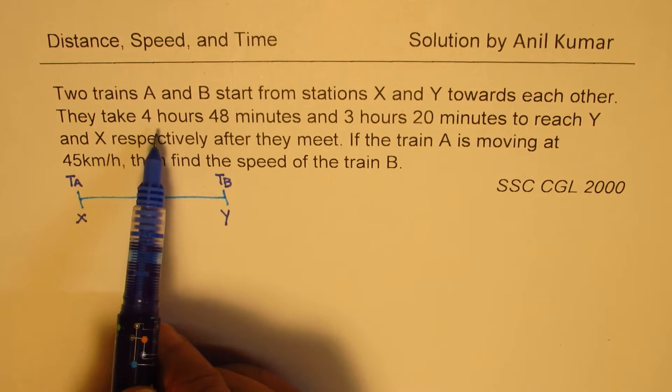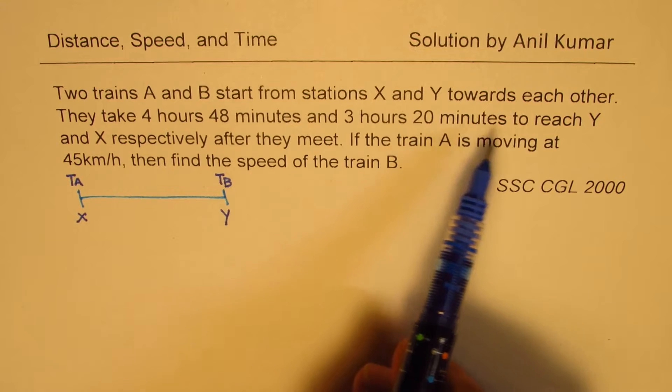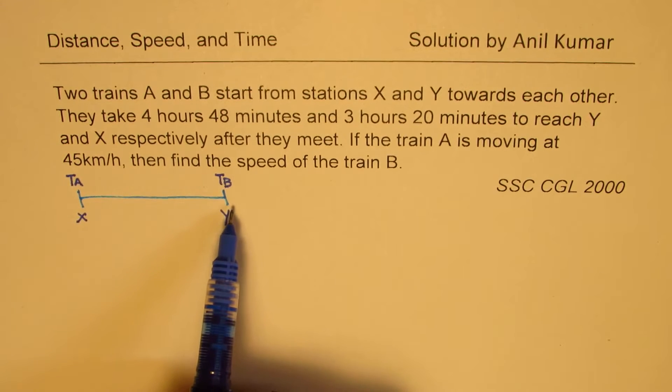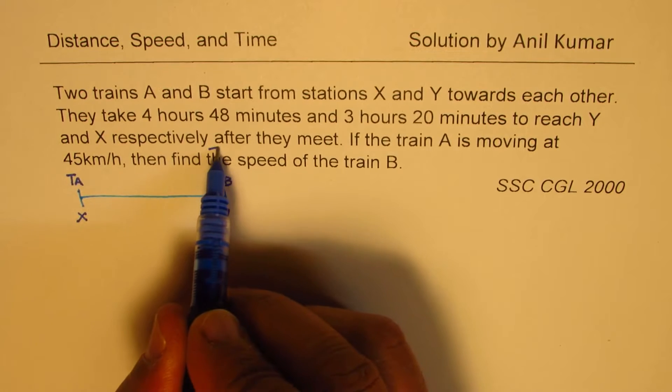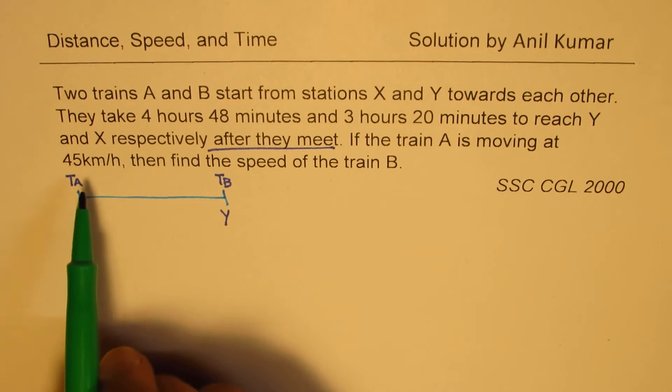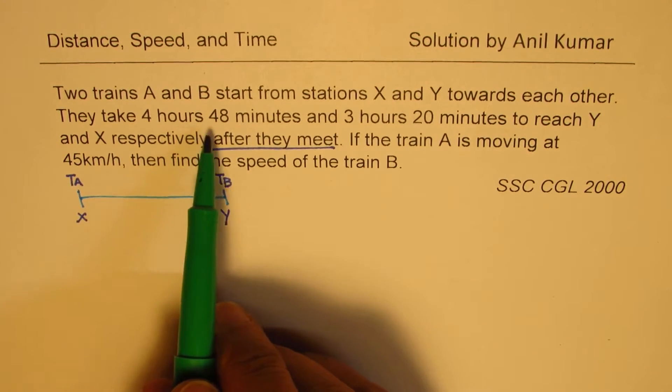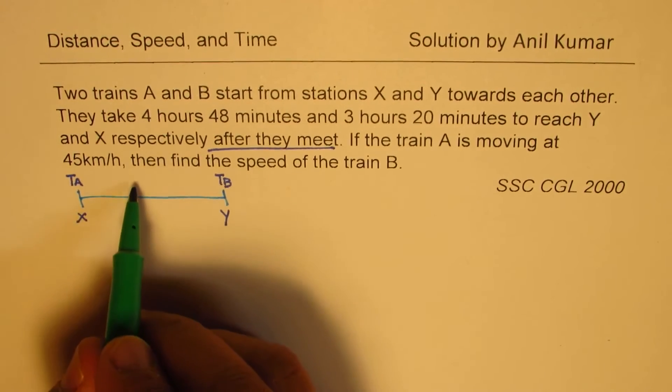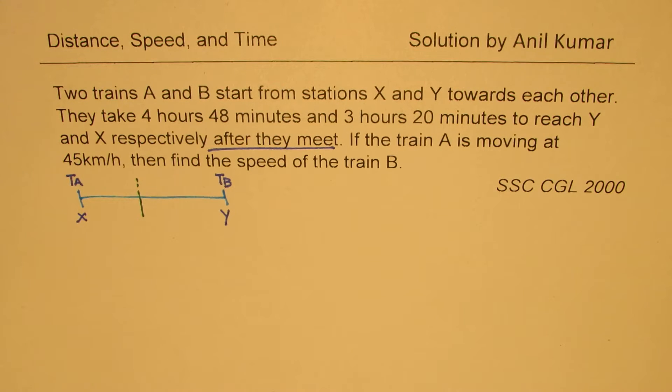They take 4 hours 48 minutes and 3 hours 20 minutes to reach Y and X respectively after they meet. That is a very important statement to understand. So the first train A takes 4 hours 48 minutes. Let's say somewhere here they meet.